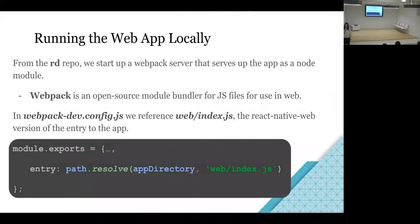To walk through how we develop locally: when we're making changes we hope will end up in the browser — whether it's a change only for browser or also for tablet — most of that work happens in the RD repo, the React Native repo. To develop locally, we start up a Webpack server and serve the app as a node module. Webpack is an open source module bundler for JS files for use in the web. The only thing we have to do to tell Webpack it's going to be a web app is set the entry to the resolved path of web/index.js. It's very simple in terms of deciding that it's going to be web.